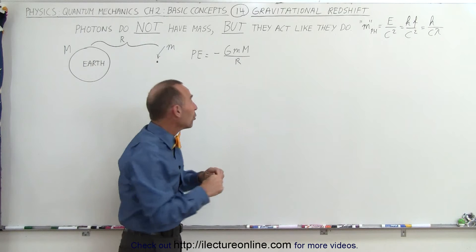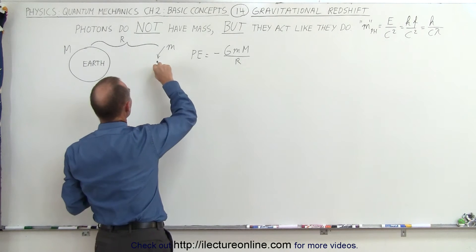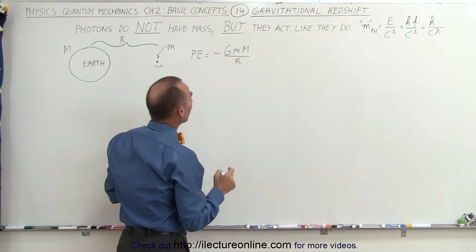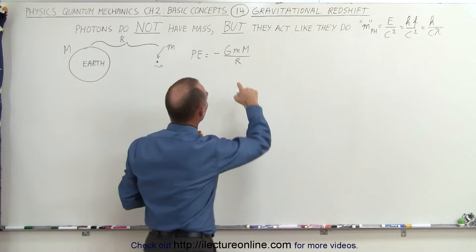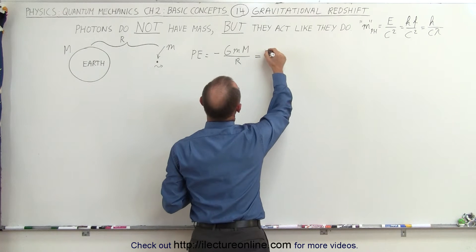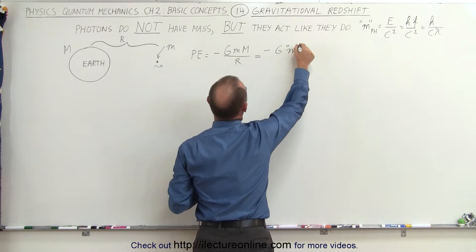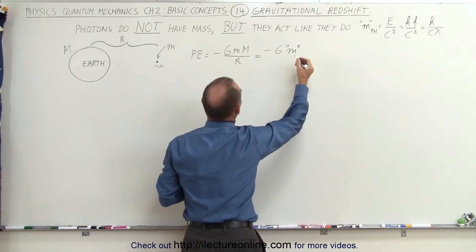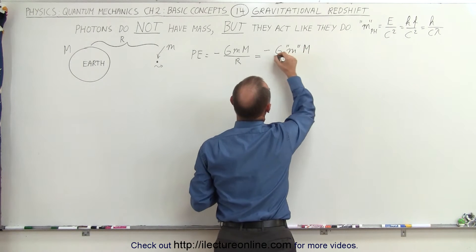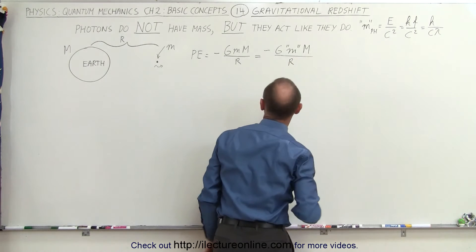For a photon in that particular location, we now use the equivalent mass — or perhaps 'apparent mass' is a better word. So the potential energy becomes minus G times the apparent mass of the photon times the mass of the earth divided by R.